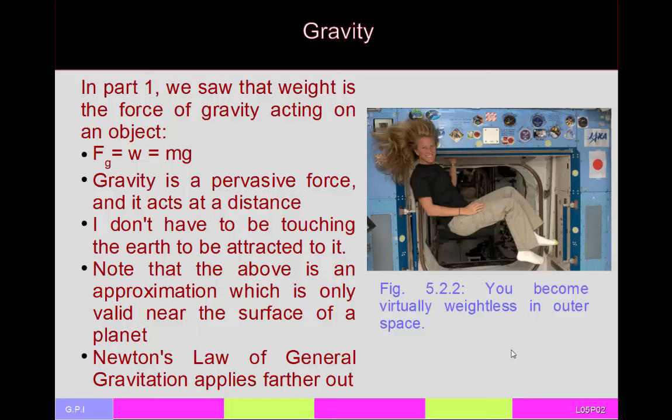The first thing I wanted to talk about is gravity. In the first part of this lecture set we saw that weight is the force of gravity acting upon an object — sometimes labeled as F_g, sometimes as lowercase w for weight. The force of gravity equals the weight of the object, which near the surface of a planet is the mass times the free-fall acceleration: approximately 9.8 meters per second squared on Earth, about a sixth of that on the moon.